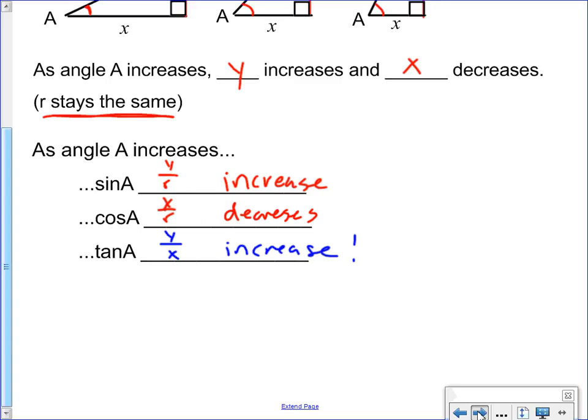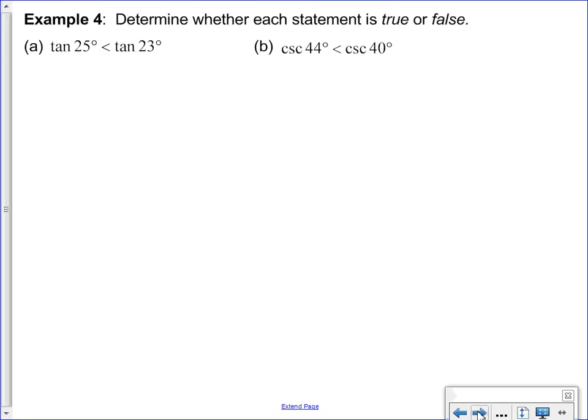Let's take a look. True or false, tan 25 is less than tan 23. 25 is bigger than 23. So the tangent, the y is bigger. Tan is y is bigger. So tan 25 is bigger. Tan 25 would have a bigger y than tan 23. So this is obviously false. How can I check? You can type it into your calculator to check it. Remember, though, that on the test, you won't have your calculator to check it. You'll have to know the logic of it.